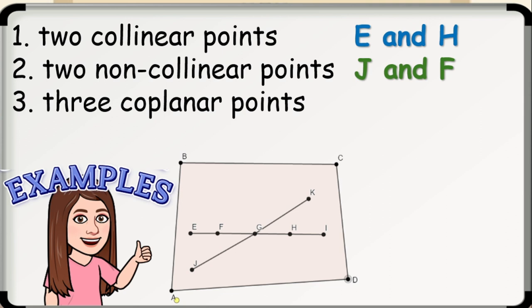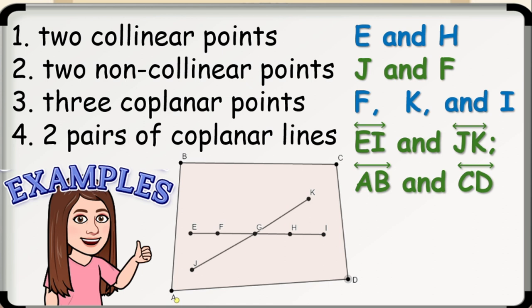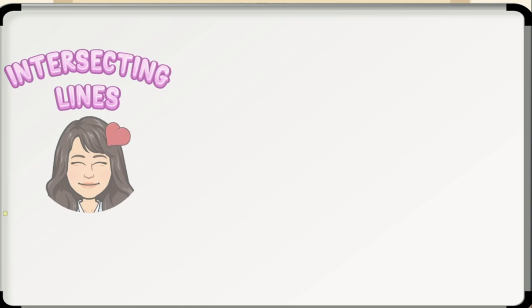Number three, three coplanar points. We have point F, point K, and point I. And lastly, two pairs of coplanar lines. We have line EI and line JK. We also have line AB and line CD. Let's now have the other geometric terms on lines.